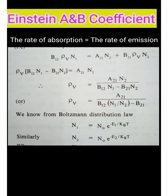Under thermal equilibrium condition, the rate of absorption is equal to the rate of emission. So from this we can write the equation B12 rho nu N1 is equal to A21 N2 plus B21 rho nu into N2.